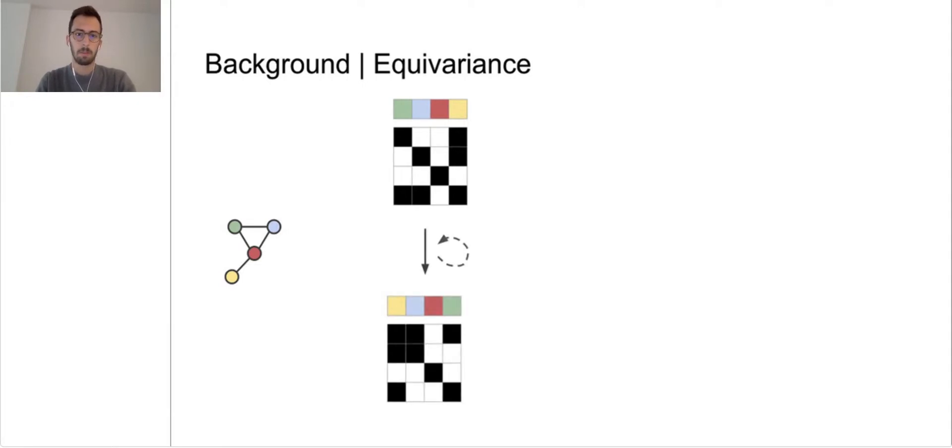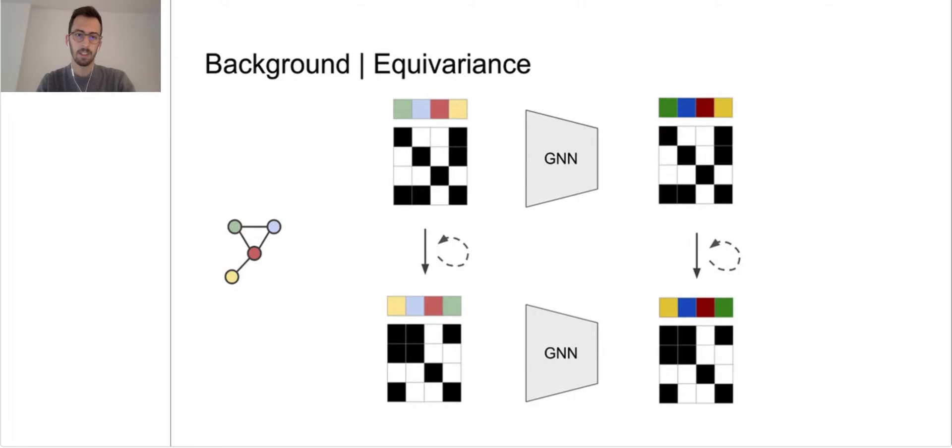Therefore, if we permute the indexes of the nodes, we are still representing the same graph. This is why graph neural networks are built to be equivariant to permutations, such that learning on a single arbitrary order of indexes implies generalization to all its permutations.